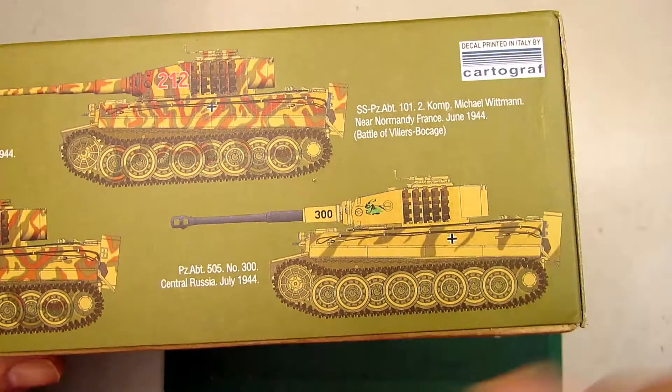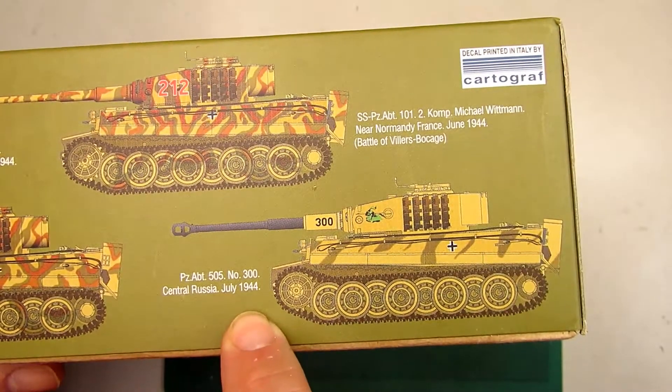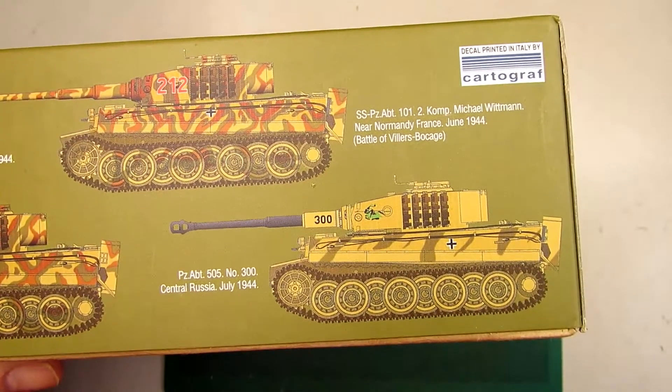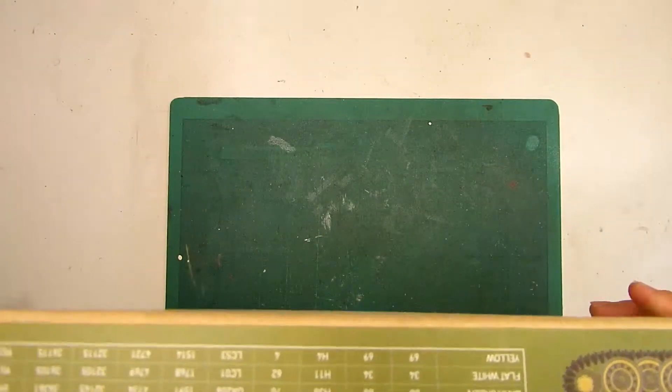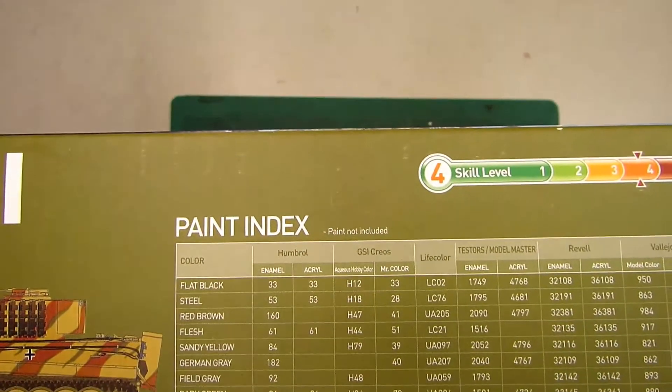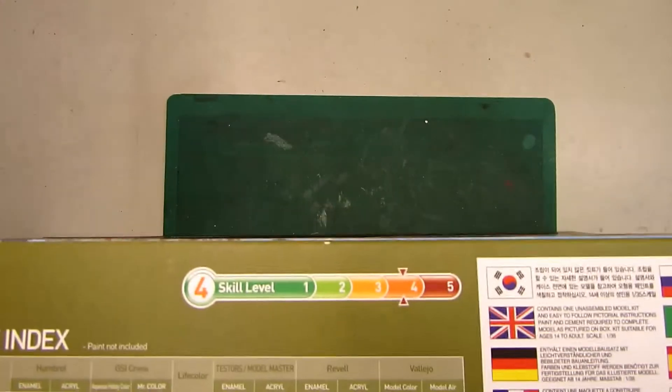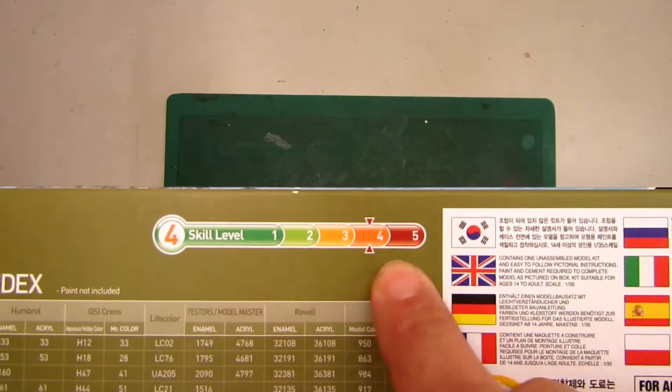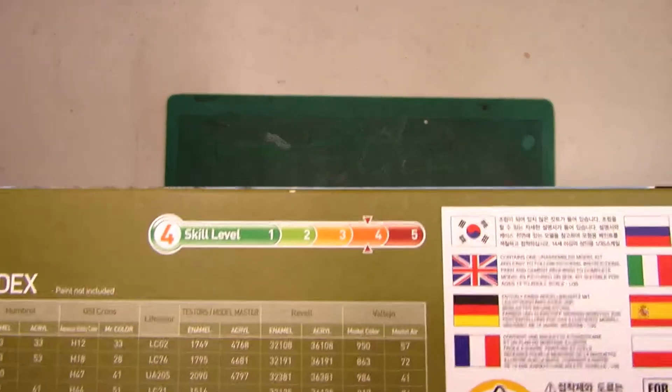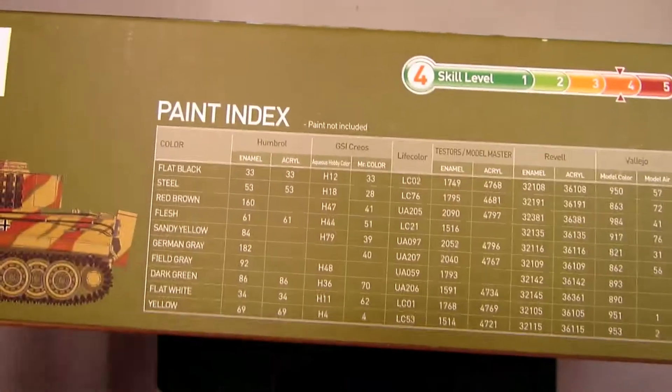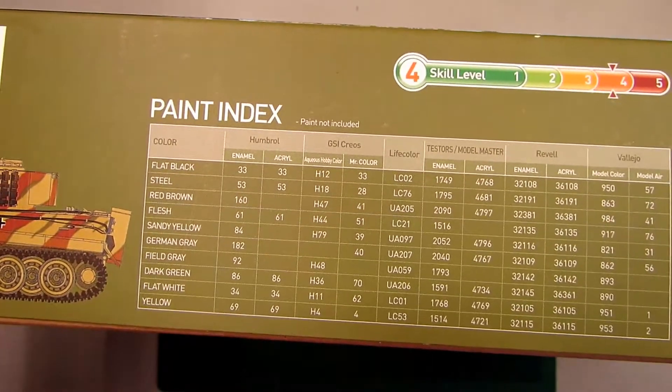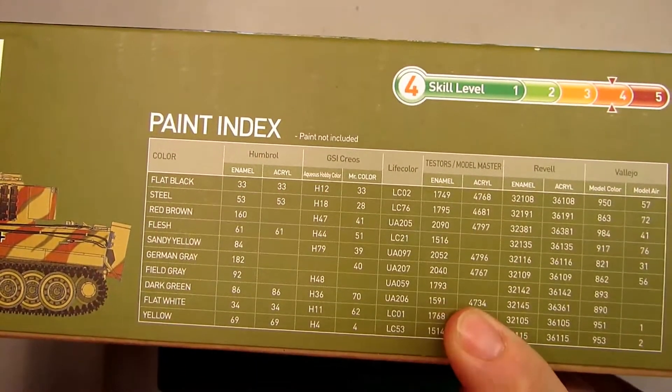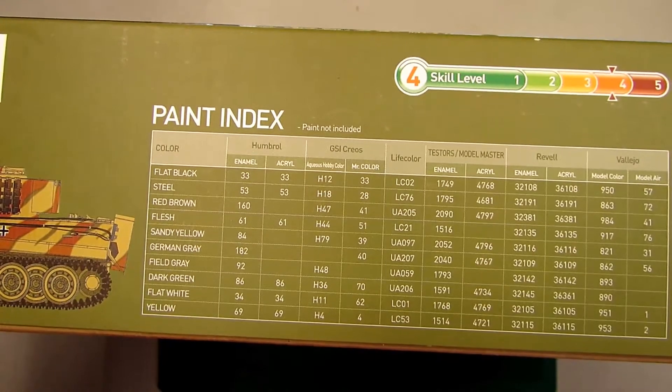We got this tool from Michael Wittmann in Normandy, France in June 1944 from the 4th Battle of Villers-Bocage. And we got this in Central Russia in July 1944. I think there is another inside but I will go and see. This is a skill level 4, the 1 of 5.